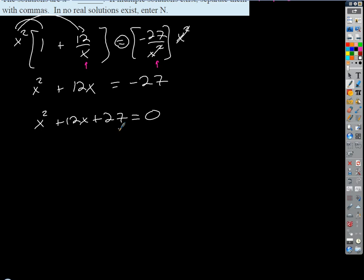If that didn't work we would try the quadratic formula. This factors pretty easily - magic numbers that multiply to 27 and add to 12 would be 9 and 3. So those give us the zeros x equals negative 9 and x equals negative 3.